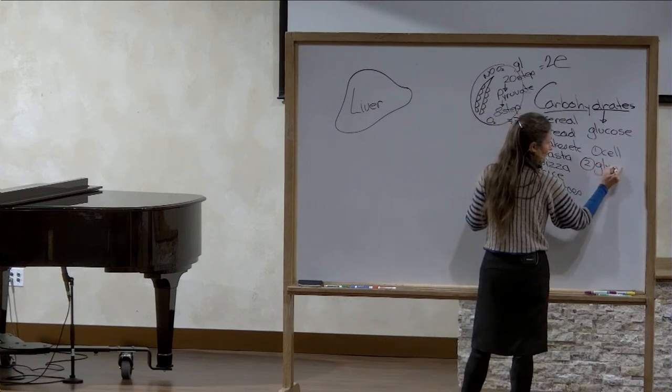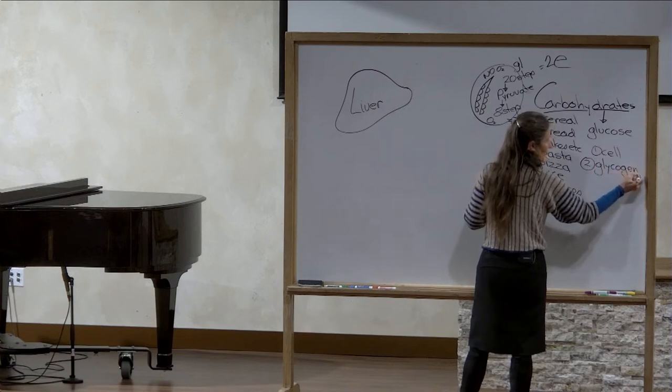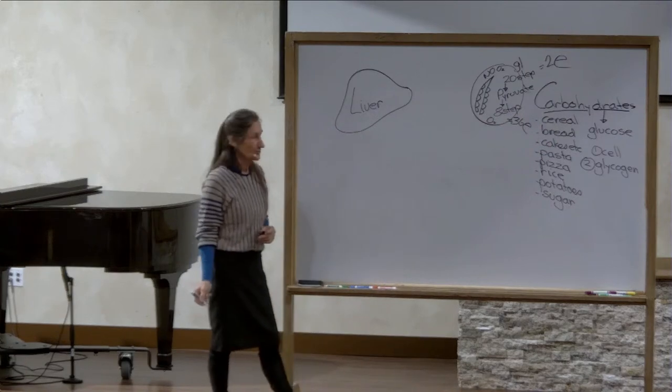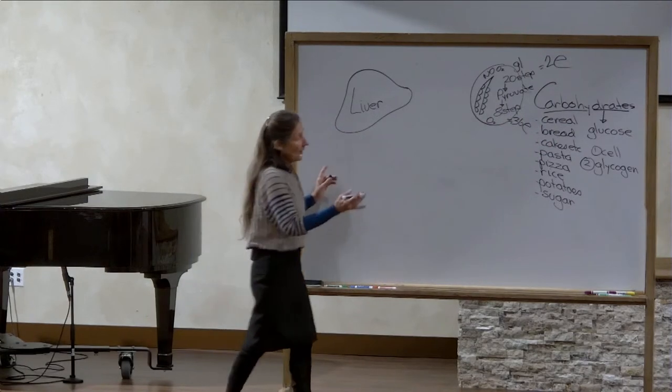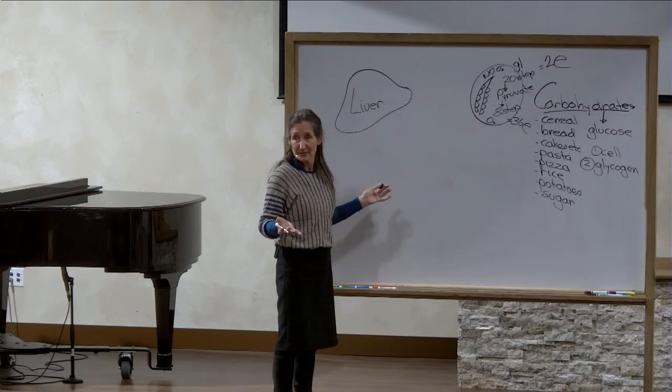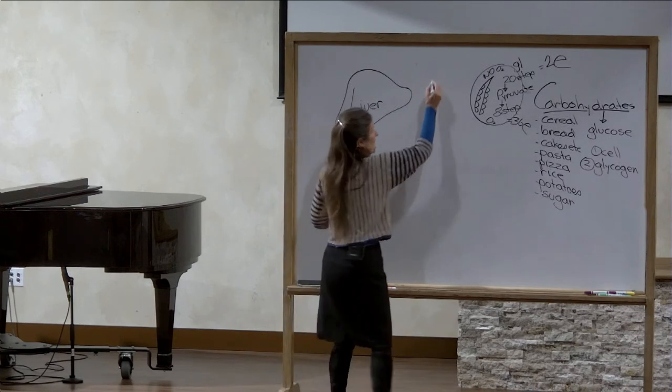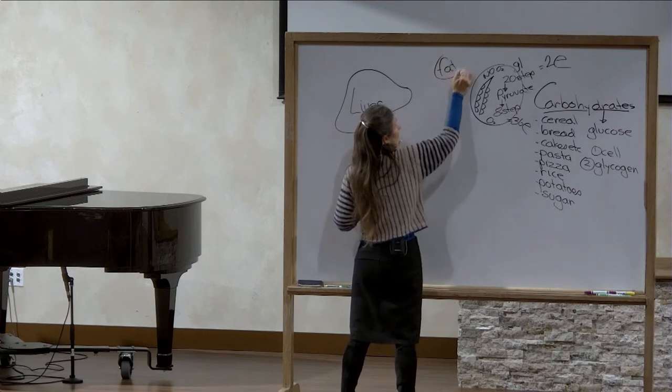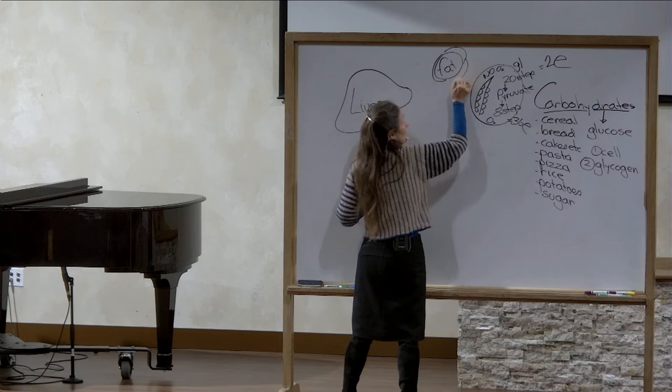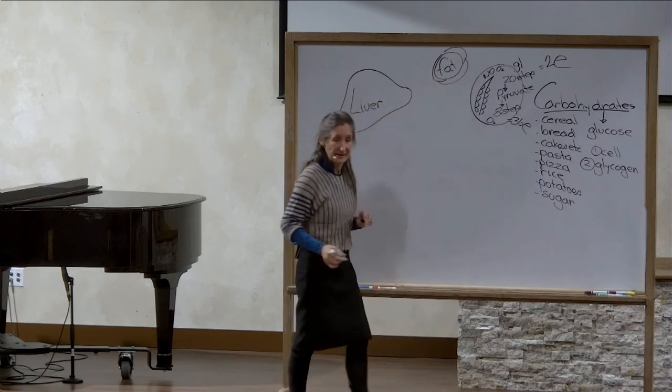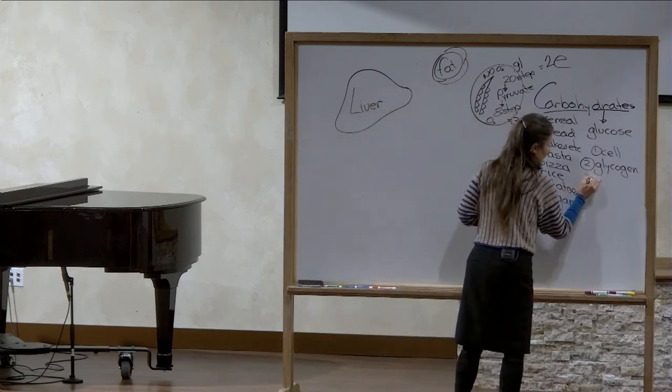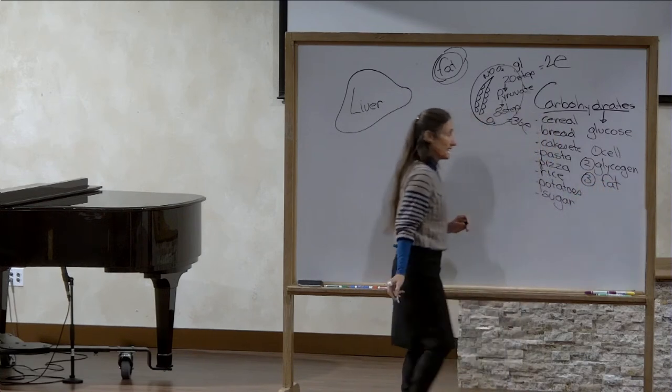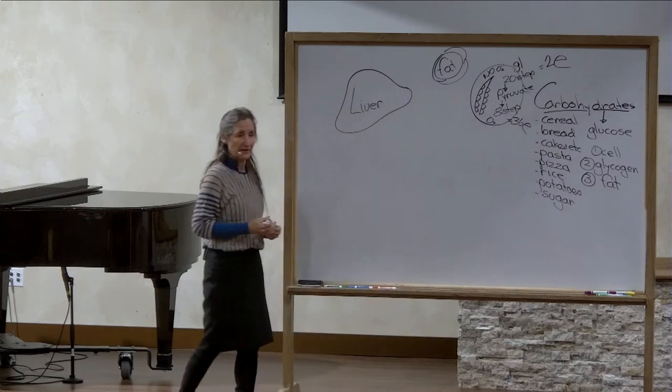We're going to be looking at diabetes later in the week, and we're going to be seeing how important those little glycogen stores are. But on a high-carbohydrate diet, we've still got a lot of glucose left over. Now, the liver causes it to be stored in the most amazing fuel deposit in the human body, fat cells. This is the third place - all the excess gets sent is to the fat cells.